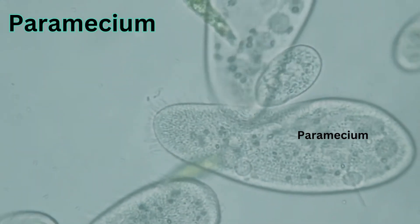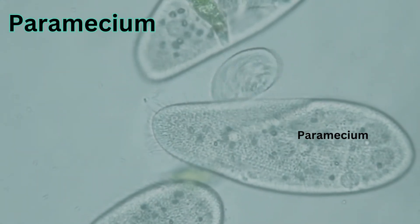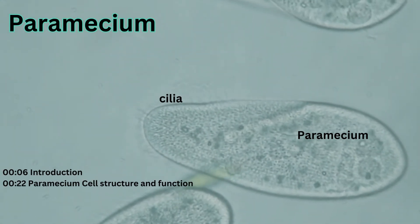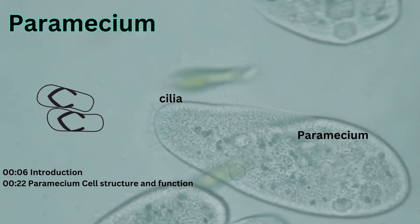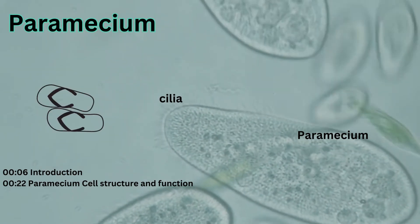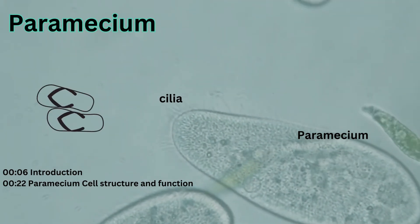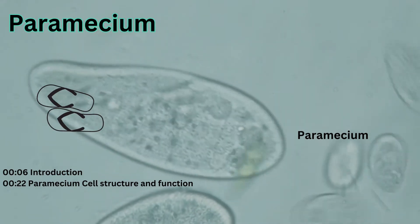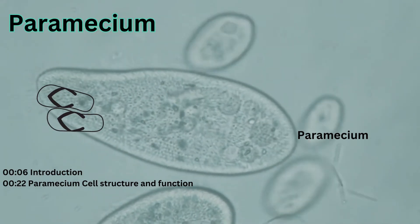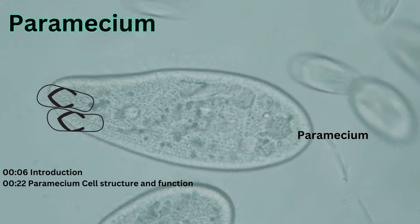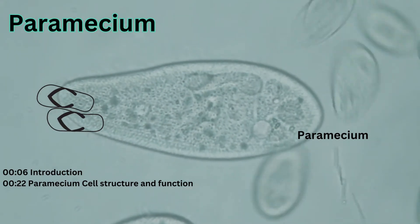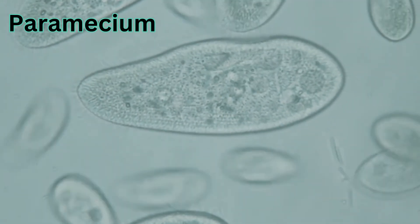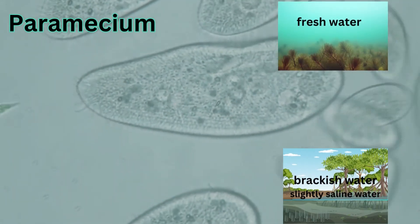Paramecium is a unicellular ciliated protozoan. It is characterized by its slipper-shaped body and the presence of thousands of cilia covering its surface. Paramecium is a heterotroph, meaning that it must feed on other organisms for energy. It is found in fresh water and brackish water.